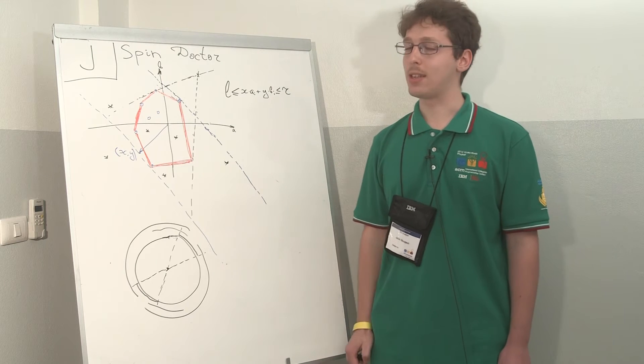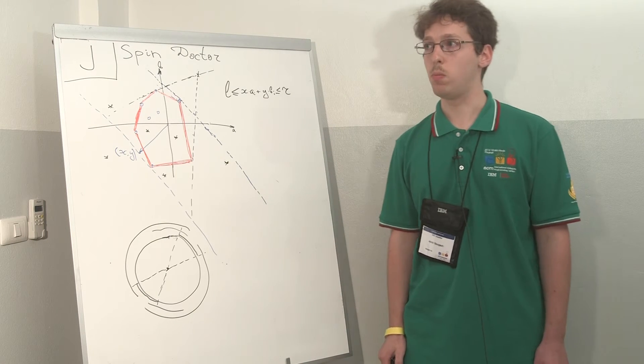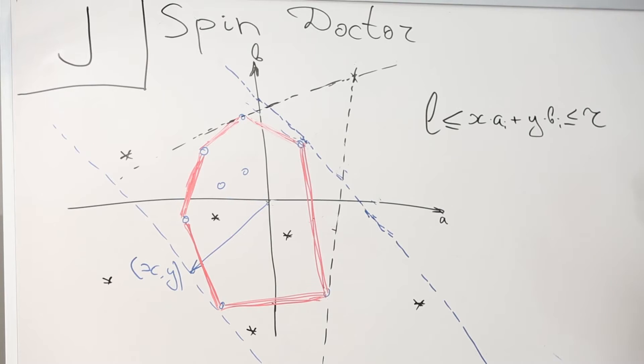You take the scalar product of a point in two-dimensional space by a vector that you can choose, and the scalar product should be in the range between L and R.